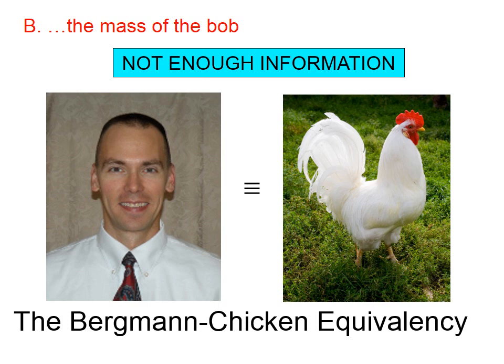This is what I call the Bergman-Chicken equivalency. In other words, if you take that 6.7 meter long pendulum, and you put Mr. Bergman on the end of it, and swing it back and forth, it'll take 5.2 seconds to swing back and forth.